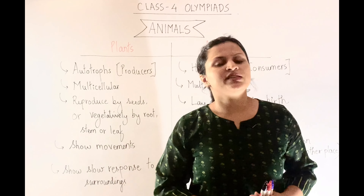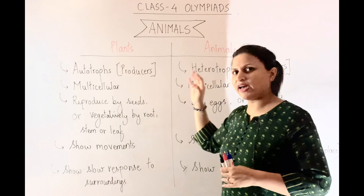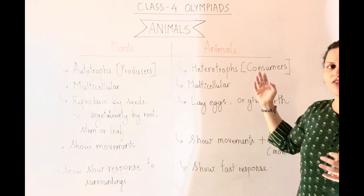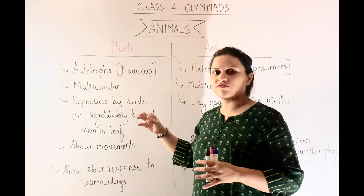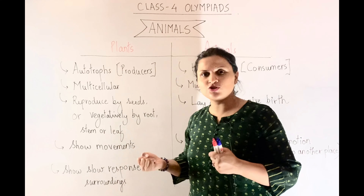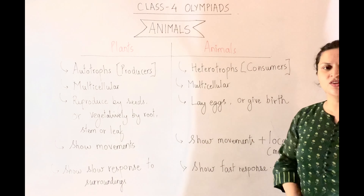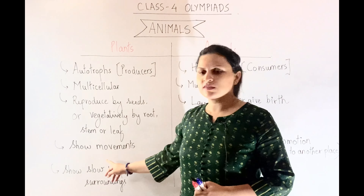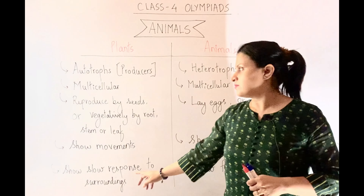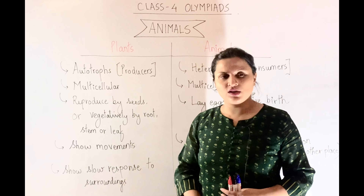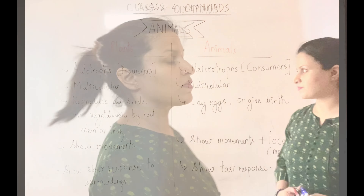Quick recap: Plants are autotrophs — they can produce their own food. Animals are heterotrophs — they depend on other plants and animals for food. Plants reproduce by seeds or vegetatively through roots, shoots, and leaves, while animals either lay eggs or give rise to young ones. Plants show movements, animals show movements plus locomotion. Plants show slow responses to external stimuli, but animals show quick responses to their surroundings.